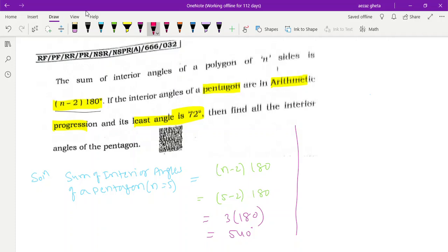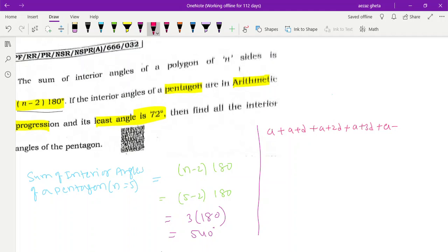Now they are telling the total interior angle of a pentagon is 540. The angles are in AP, so AP means the first angle is a, then a plus d, plus a plus 2d, plus a plus 3d, plus a plus 4d. First angle, second angle, third angle, fourth, and fifth angle. Sum of all angles is 540.